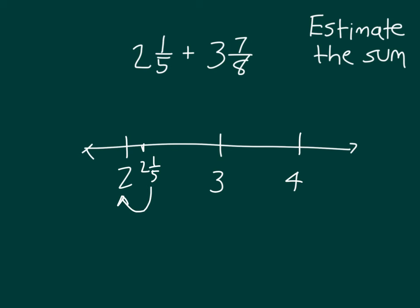For 3 and 7 eighths, it would be between 3 and 4 and only 1 eighth away from 4. It's closer to 4 than to 3, so we would round up to 4. Notice how close these mixed numbers are to the rounded numbers of 2 and 4. So we have 2 plus 4, which equals 6 — that's our estimate.